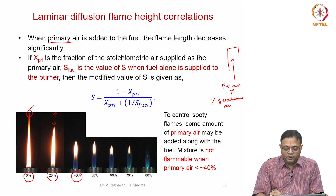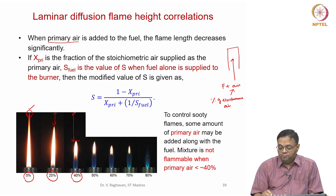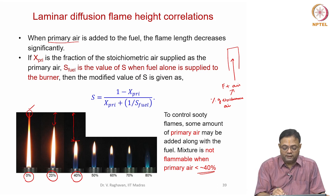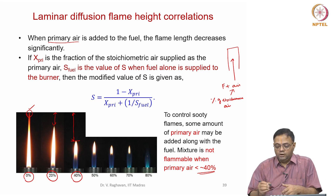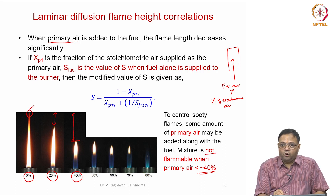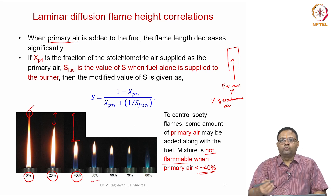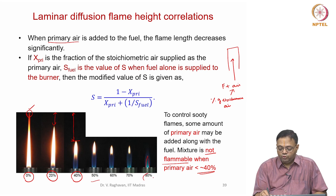Increasing to 40 percent primary air, the flame height drops significantly. At 40 percent, the mixture of LPG plus 40 percent of the stoichiometric air is not flammable — the equivalence ratio is above the upper flammable limit. But when you go beyond 50 percent, you enter the premixed combustion regime. At 60 percent and higher, more and more growth of the blue premixed zone appears, and at 80 percent, the inner cone is very clearly visible.